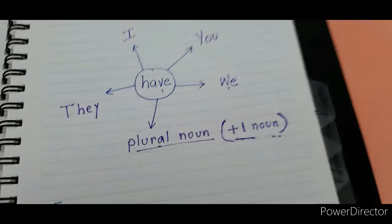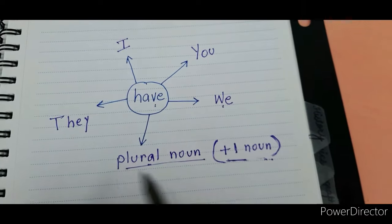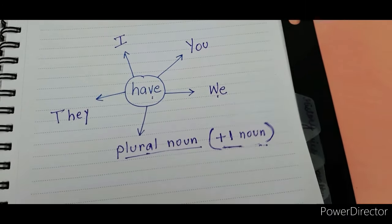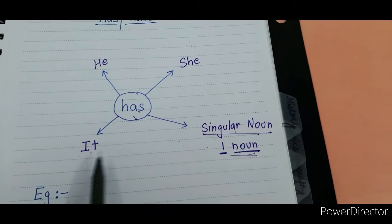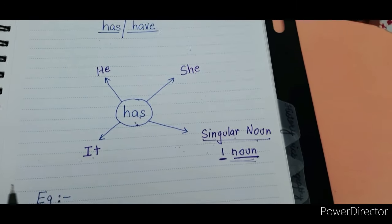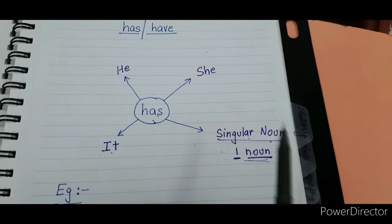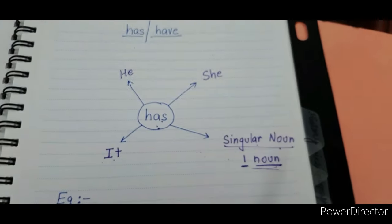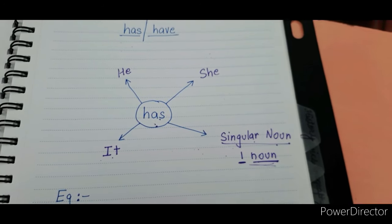Now you have to learn this flow chart for 'have' and for 'has'. Once you learn this flow chart, you can easily use 'has' and 'have' without any mistake. Do watch this video again and learn the flow chart. Bye-bye!